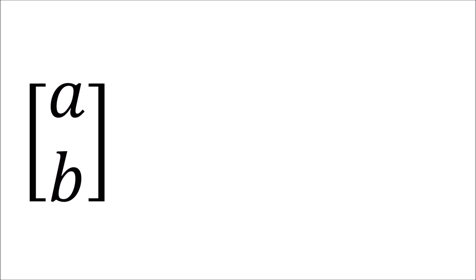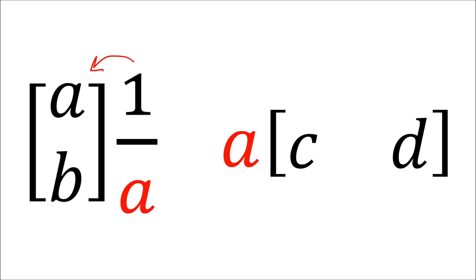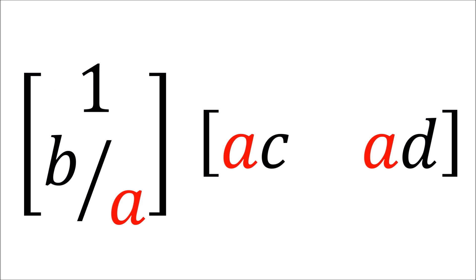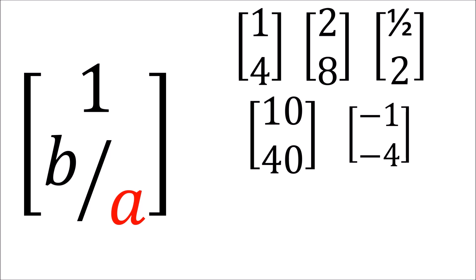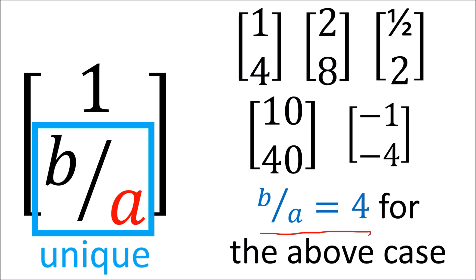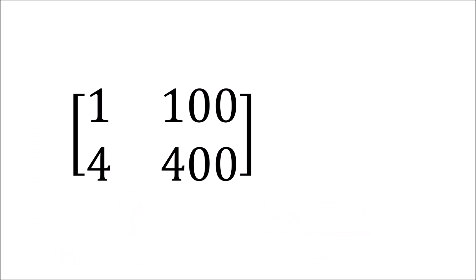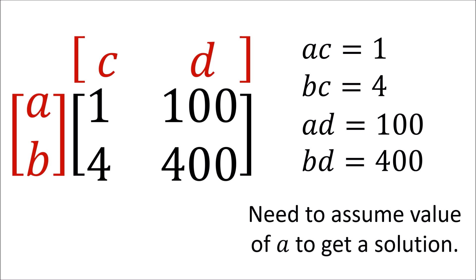If we write the column as (A, B) and the row as (C, D), we can multiply the column by 1/A and the row by A to get another valid solution. The resulting column has components (1, B/A). While there are multiple possible columns that solve the factoring problem, the B/A ratio for all these columns is the same. So when factoring a matrix, we can get multiple possible columns, but there is only one unique B/A ratio that solves the factoring problem. Since there are an infinite number of solutions, you'll have to decide what A should be before solving for the rest of the variables.